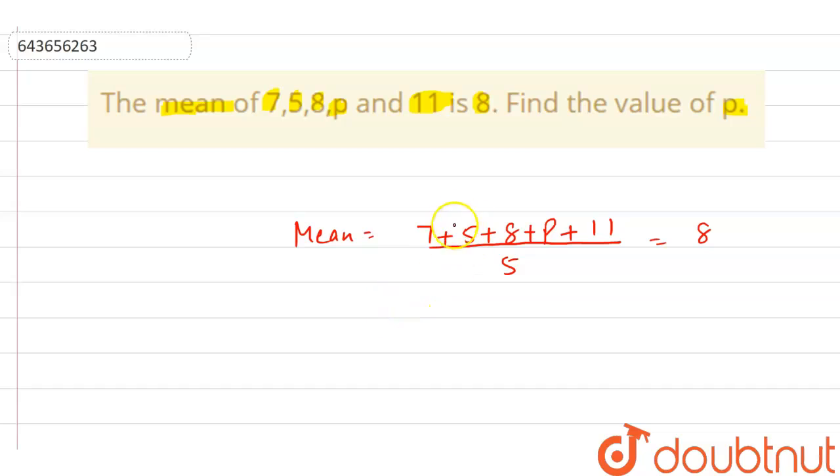So now here if we add then we can write here 8 plus 7 that is 15, 15 plus 5 that is 20 and 20 plus 11 that is 31 plus p and this equals to 8 into 5 that is 40.